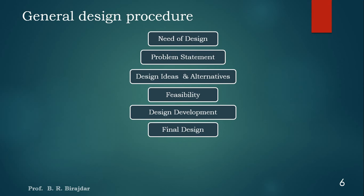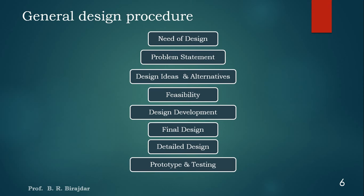After design development, we go for the final design, where we again consider aesthetics, ergonomics, stability, production method, and cost. Then lastly, detailed drawing — that includes plans, drawings, standardization, and optimization. Then we go for a prototype and test it. If it passes testing, we can proceed to production. This is the overall general design procedure.